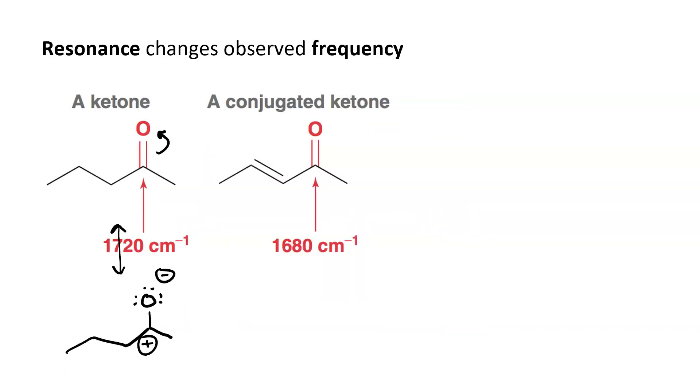For a regular ketone that is not conjugated, there is only a small amount of single bond character, because there's only one resonance structure that has a single bond. The conjugated ketone contains that resonance pattern of a pi bond between two atoms of different electronegativity, but it also contains an allylic carbocation. So it has a second resonance structure where the C=O bond is single.